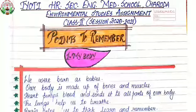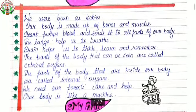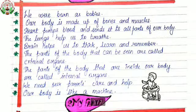Let us recall some important points that we have to remember about each and every lesson. Lesson number one, My Body. We were all born as babies. Our body is made up of bones and muscles. Your heart pumps blood and sends it to all parts of our body. The lungs help us to breathe.